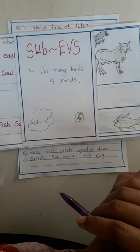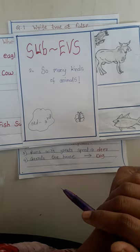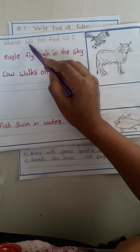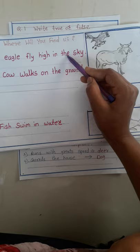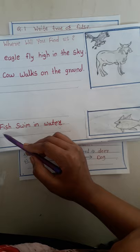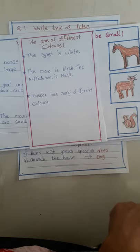Very good! Now see where you will find us. An eagle flies high in the sky. A cow and ox are on the ground. Fish swim in the water.